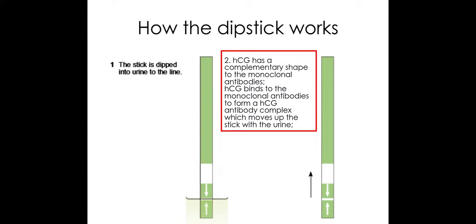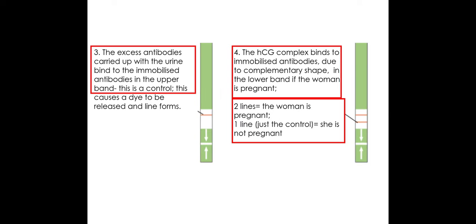The first thing that happens is the stick is dipped into urine up to a certain line. If HCG is present within the urine sample, the HCG will be complementary and specific in shape to the monoclonal antibodies, and the HCG will bind to the monoclonal antibodies on the stick to form an HCG-antibody complex. This will then move up the stick with the urine as the urine moves up.